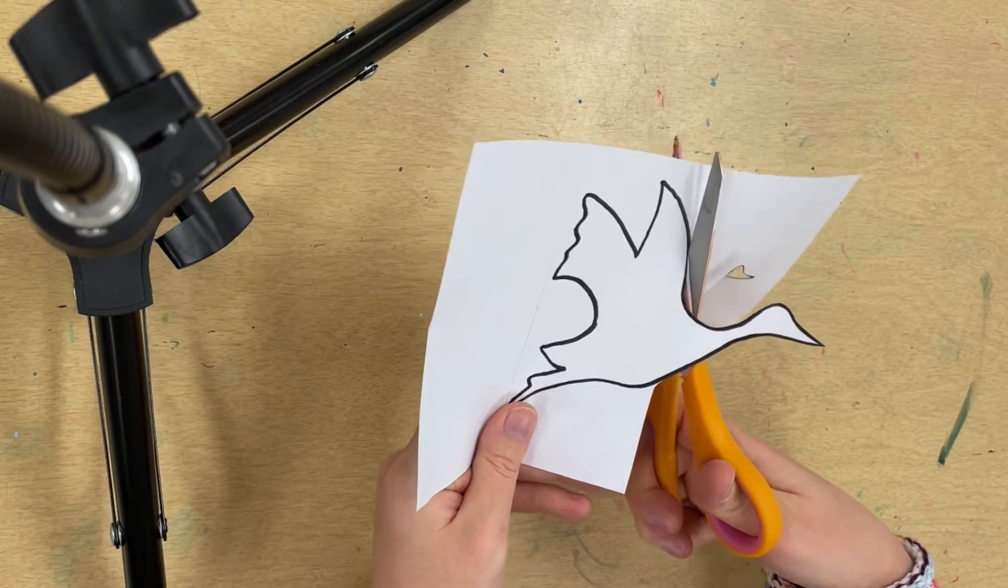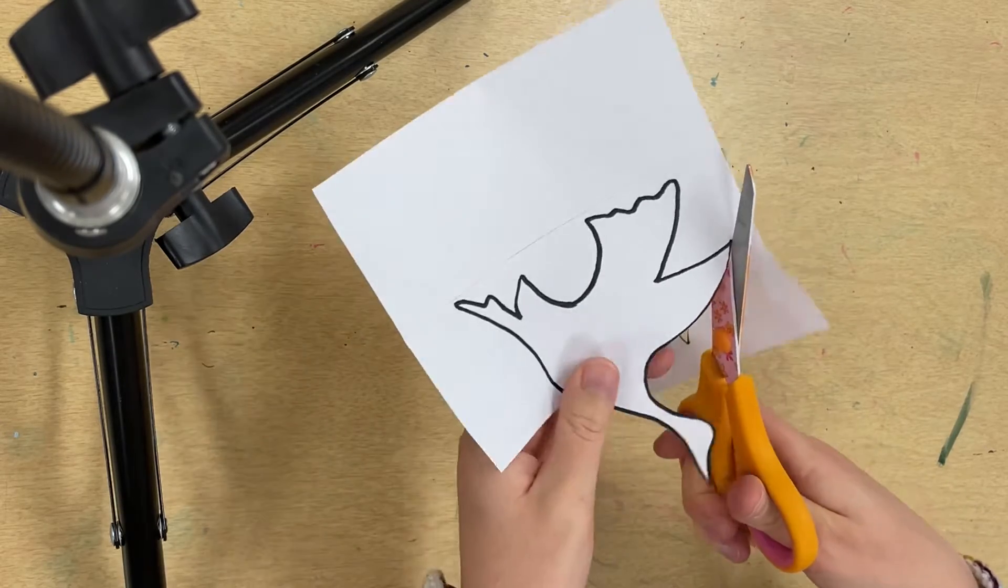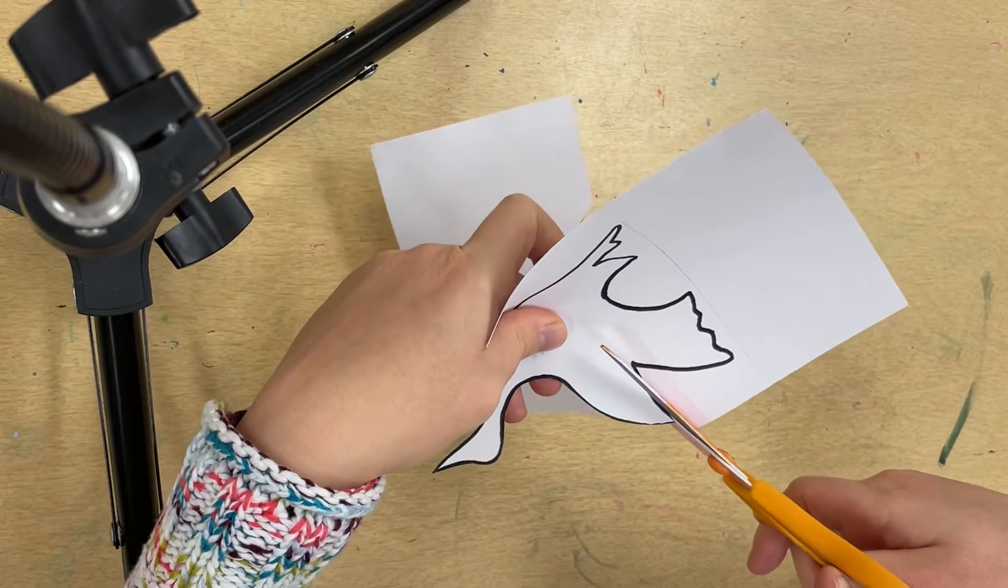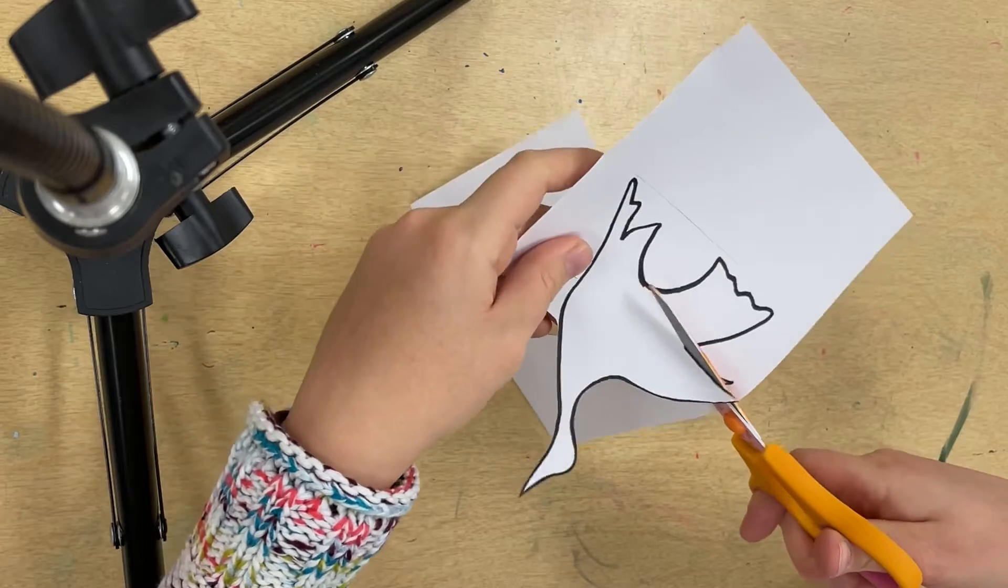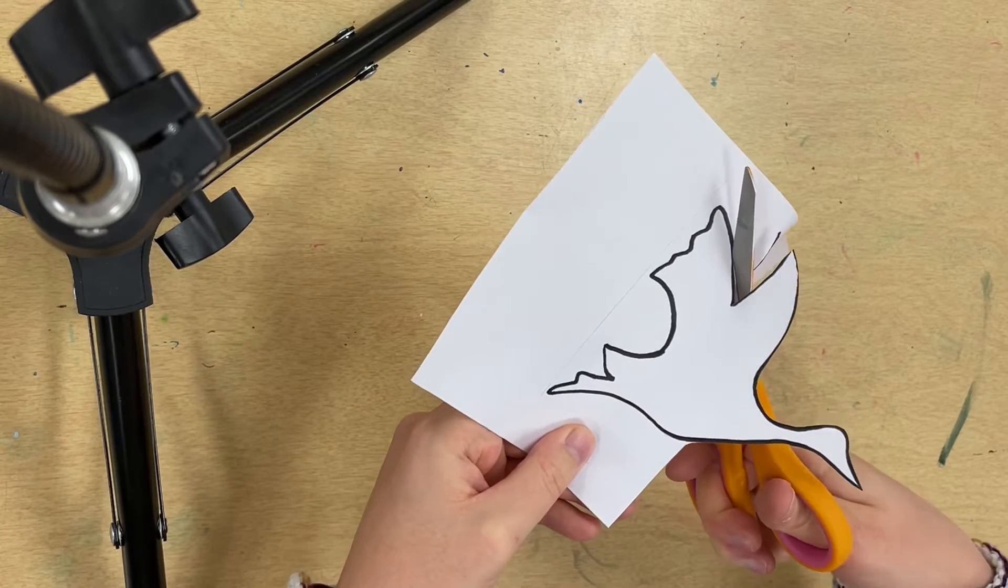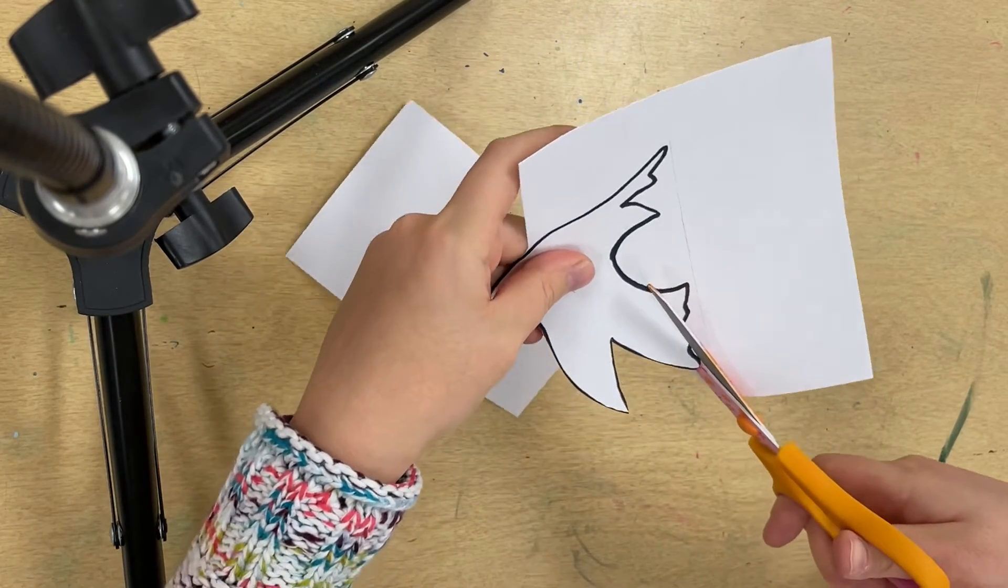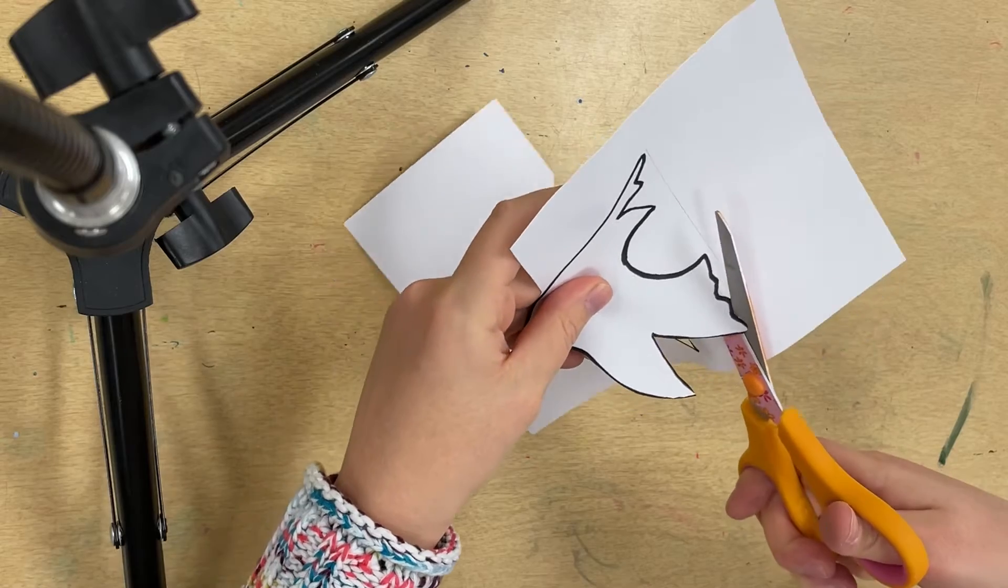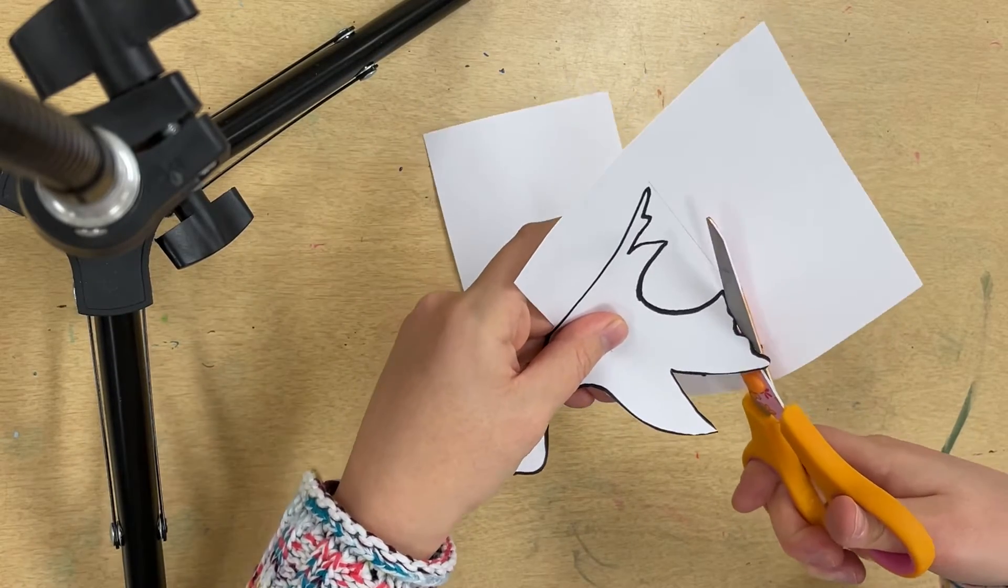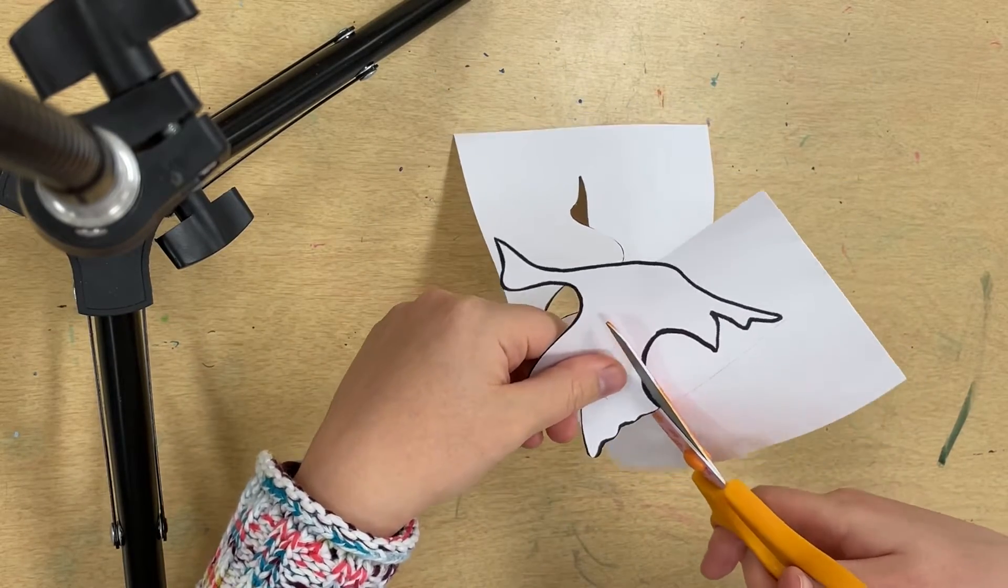I'm cutting super carefully around my crane shape. You might want to take it super slow because each of these animal shapes has some little intricate parts to them, and we want to make sure that we get all those parts cut out well while still preserving the negative space. Notice I'm not cutting off any chunks of paper. I'm just rotating the shape so I can cut all the way around it.